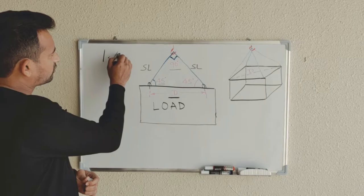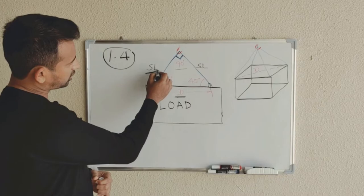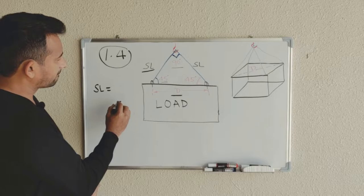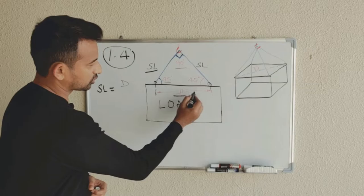Now if you want to calculate sling length, your sling length will be D, which is the distance between your lifting points, divided by 1.4.